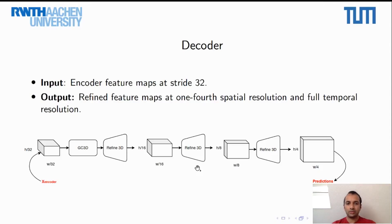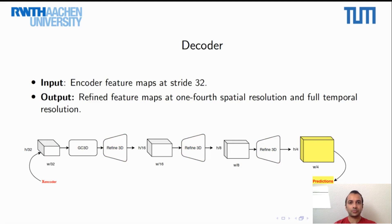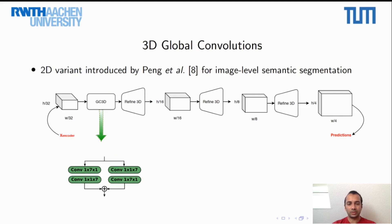We use a decoder which is fully based on 3D convolutions. It takes as input the smallest resolution feature map from our encoder, passes it to a 3D extension of the global convolutional network, and then further on to multiple 3D refinement modules to upsample the feature map to the full input spatial resolution and the full temporal resolution of the input volume. This feature map is then used to produce the output segmentation masks. The global convolutional modules split a convolutional kernel into row-wise and column-wise convolutions, enabling the usage of large kernels to capture large receptive fields, with the temporal dimension extended by a point-wise convolution.